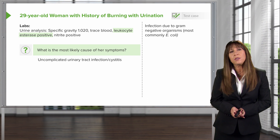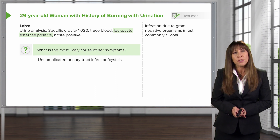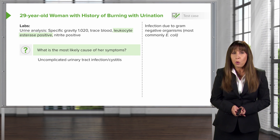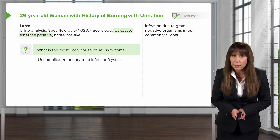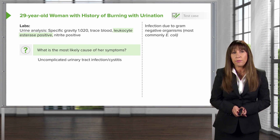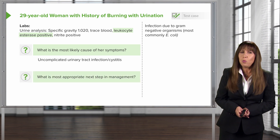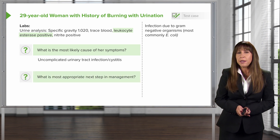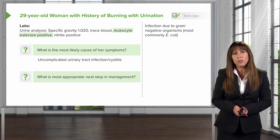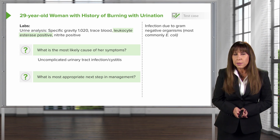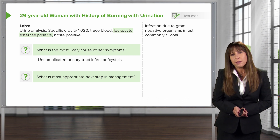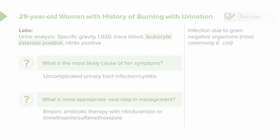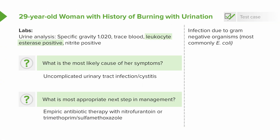So the most likely cause of this patient's symptoms is an uncomplicated urinary tract infection — or to be more specific, cystitis. The most appropriate next step in management, given her symptoms and urine analysis, is to start empiric antibiotic therapy with nitrofurantoin or trimethoprim-sulfamethoxazole.